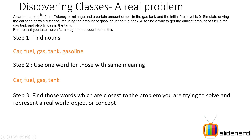In our problem we are trying to solve the problem of driving a car programmatically, which means car is the word which is closest to our problem and it also represents a real world object. Remember, fuel and gas tank are close, but they are not as close because we are actually driving a car — so car is the closest word.